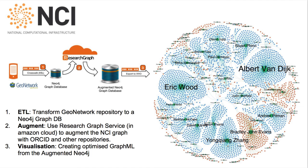By running this ResearchGraph, we can harvest all our local information, go through an augmentation process with other information systems further afield, bring that back locally, and then analyse those connections.